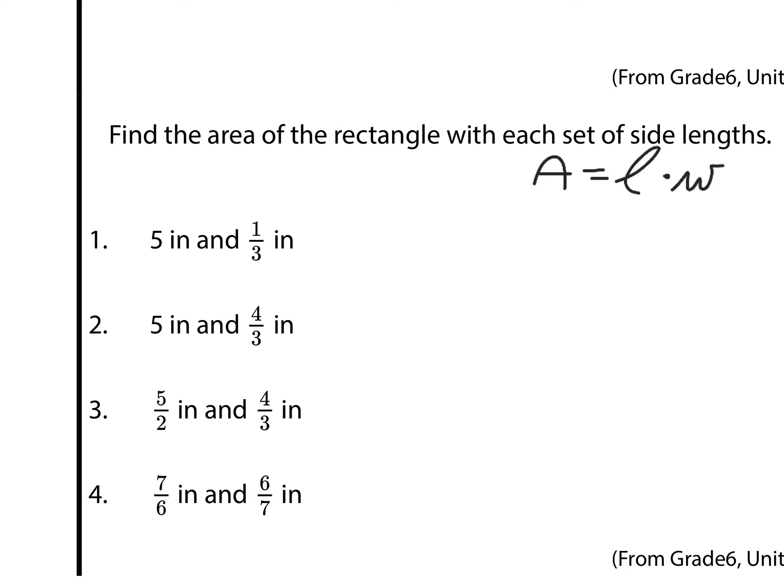Well, area for a rectangle is equal to the length of the rectangle times the width. And so our first question here, five inches and one-third inches, it's going to be five times one-third, which is simply five-thirds square inches or inches squared. You could also record this answer as one and two-thirds square inches. Same solution.